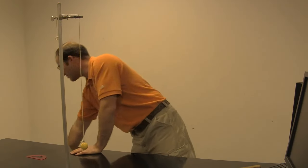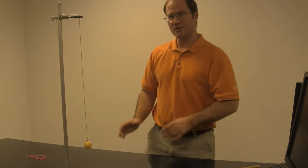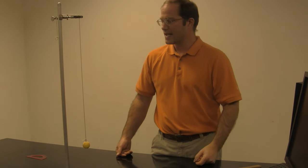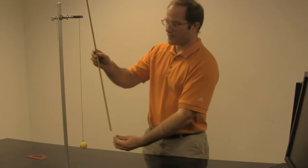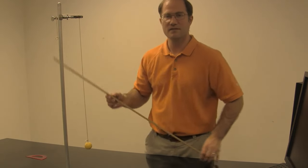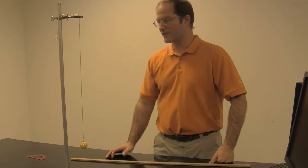And so what we want to do for activity one is we're going to verify that equation. Knowing what g is, the value of g here in Boone, knowing what the length of the pendulum is, you should be able to measure it, you're going to predict what the period should be just to verify this equation.